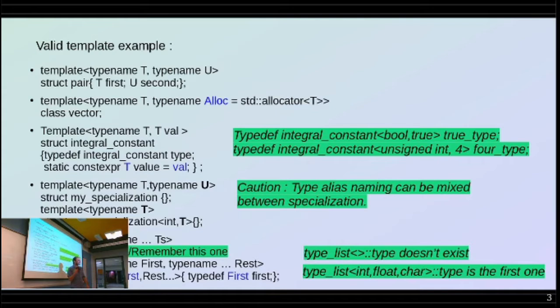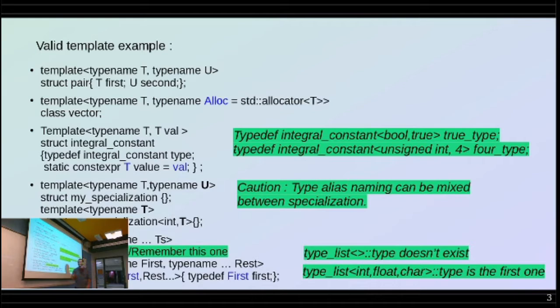Next is the most powerful template of them all. Just have template typename dot-dot-dot TS — it's a plural of T. Struct type_list. And that's the whole implementation of type_list. Now we can write something like type_list of int, float, char. And you can specialize those type lists — typename first, typename rest. And when you specialize this, it's for the type_list of first and the rest expanded. And you have a type there called first. This is just a dummy specialization to show how you get the first one.